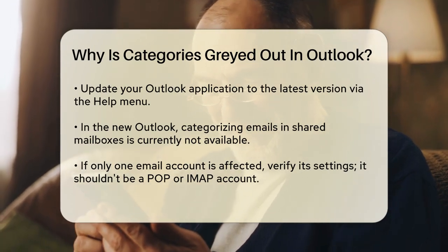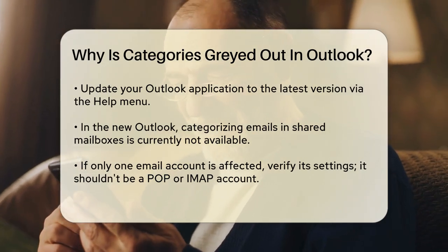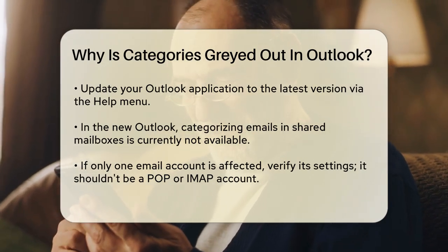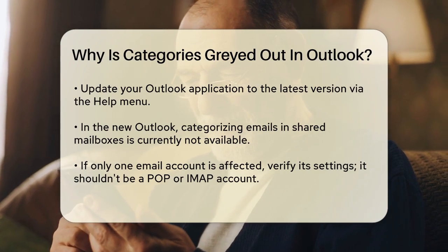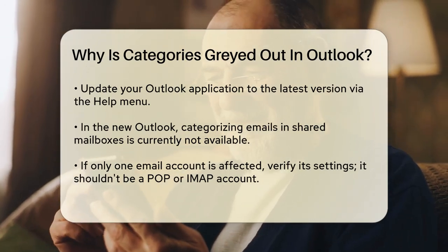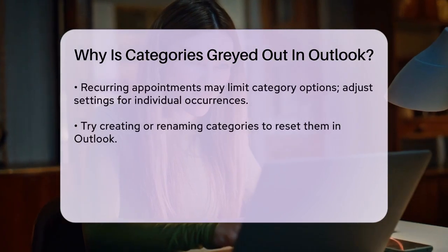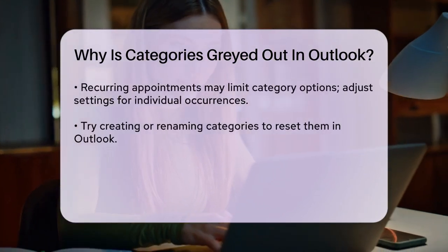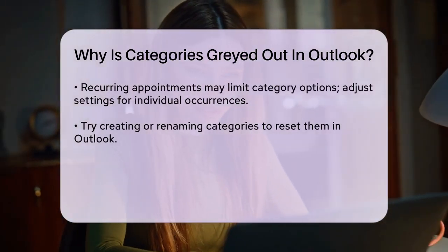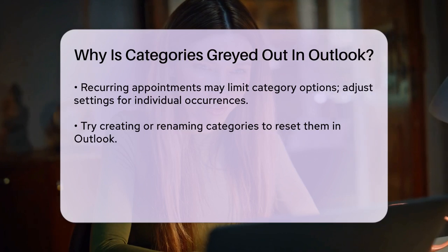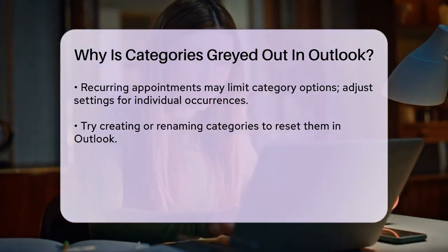Sometimes the issue could be related to the specific email account you're trying to categorize. For instance, if you have multiple email accounts set up in Outlook and only one of them is affected, it might be due to the account settings. Ensure that the email account you're trying to categorize is properly configured and not set up as a POP or IMAP account.